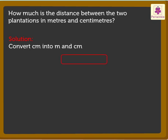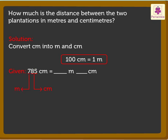We already know that 100 centimeters is equal to one meter. Here the given distance is 785 centimeters. The first two digits from the right show the centimeters, that is 85, and the remaining digit shows the meters, here it is 7. Therefore 785 centimeters is equal to 7 meters 85 centimeters.